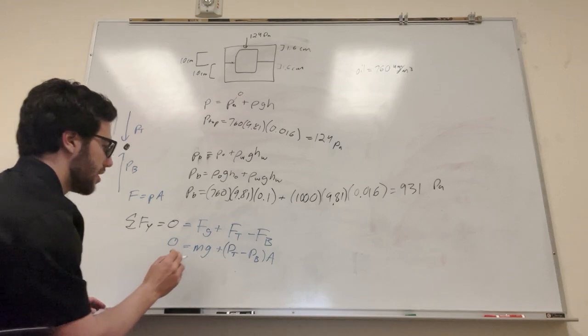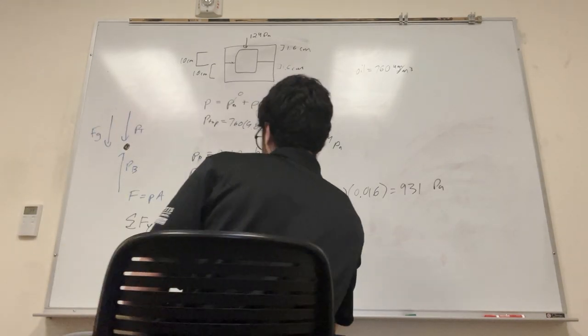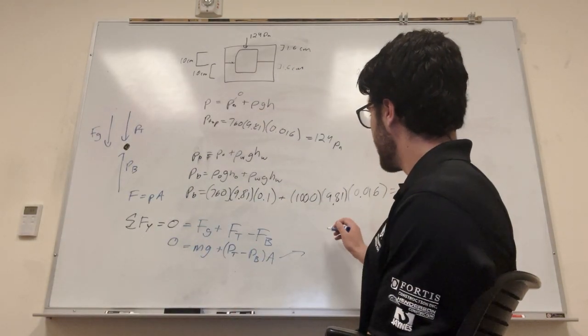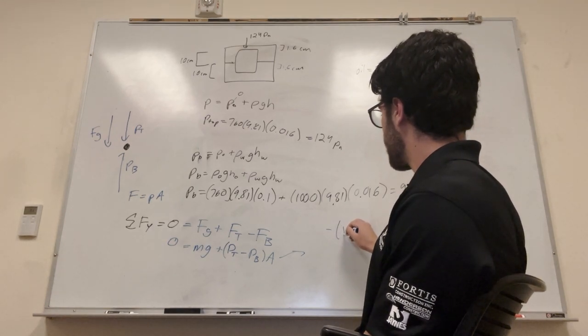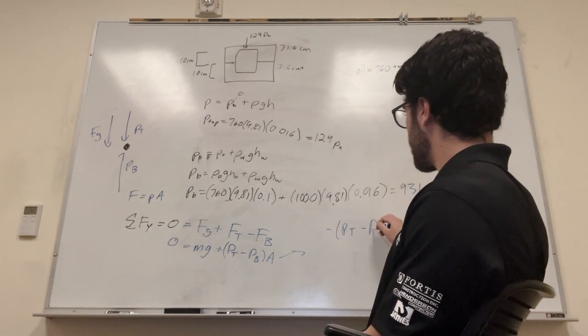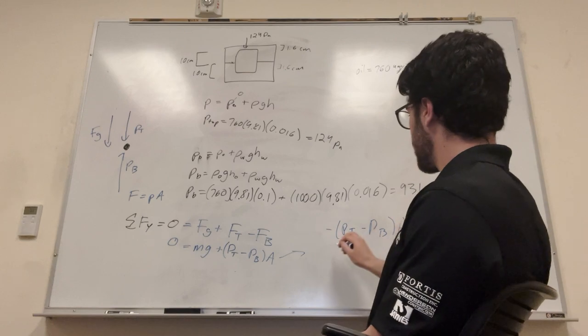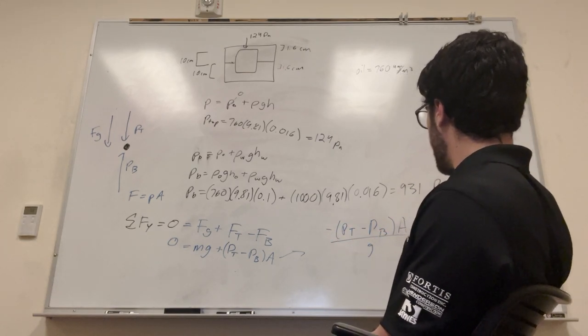So force for a liquid is equal to pressure times area. So what we need to do is put in our area for this. The area's gonna be equal on the top and the bottom. So this is gonna be equal to, and then we can expand this. So we know force of gravity is mass times gravity. Plus, so it's gonna be pressure top minus pressure bottom. And then all of that multiplied by the area.